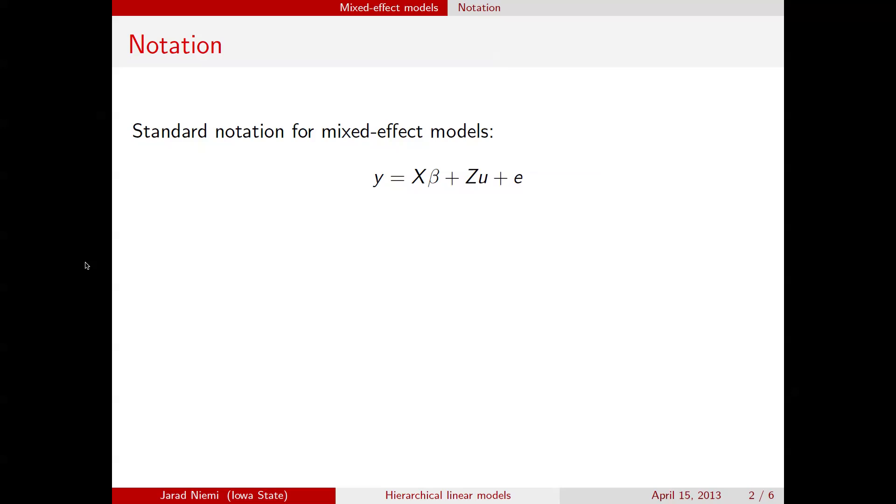So here's one version of a standard notation for mixed effect models. We have some data y, we have some fixed effects beta. y here is an n by 1 response vector, so we have n observations, and at this point we're just thinking of the observation on each unit as being scalar.